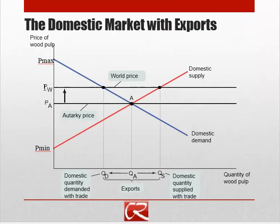To find the quantity supplied, we look at where the world price hits the domestic supply curve — that gives us quantity supplied, the amount that domestic suppliers are making. Taking that same price and looking where it hits the demand curve tells us our domestic quantity demanded — the amount that U.S. consumers actually want to buy. The difference, the amount supplied in excess of domestic demand, is the total amount of exports.